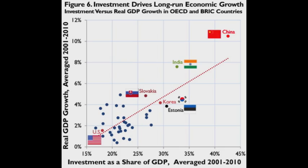This graph shows investment as a share of GDP averaged on the x-axis and real GDP growth averaged on the y-axis. As you can see, India and China, with about 35 to 45% of investment as a share of GDP, have a much higher real GDP growth average — close to 8% for India and close to 11% for China. Compared to the US, with an investment share of GDP of only around 18%, which is only experiencing about 2% of real GDP growth.